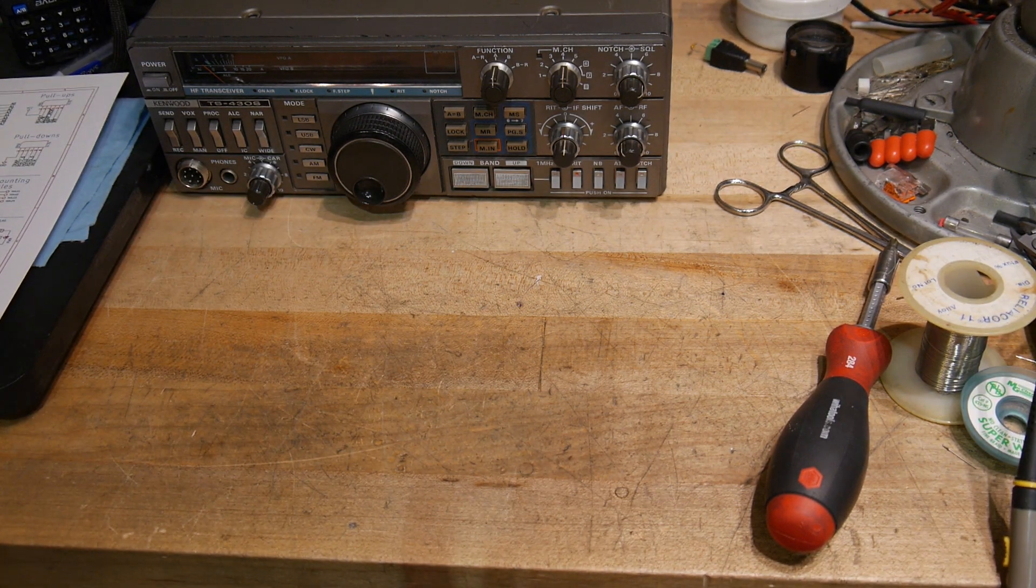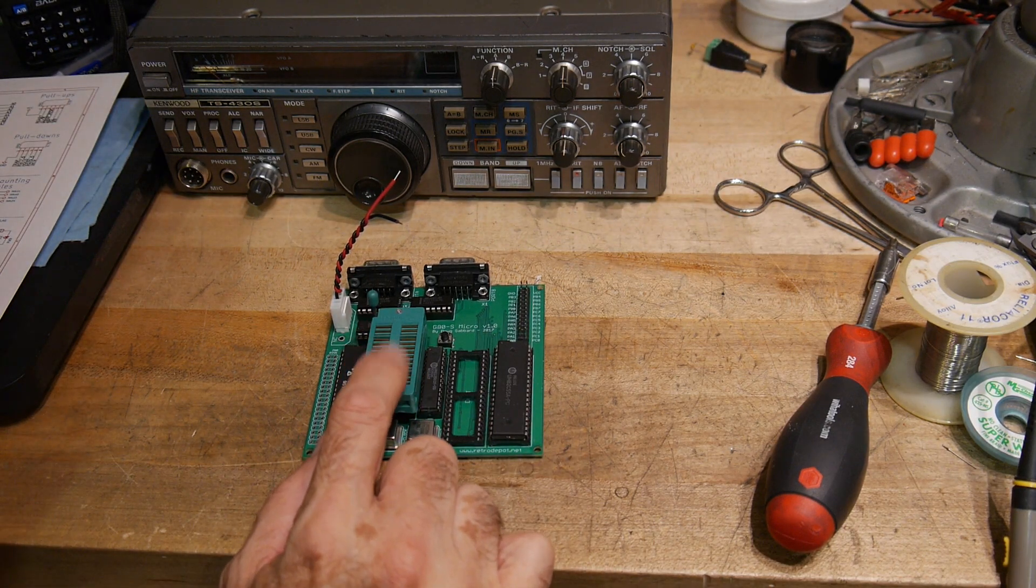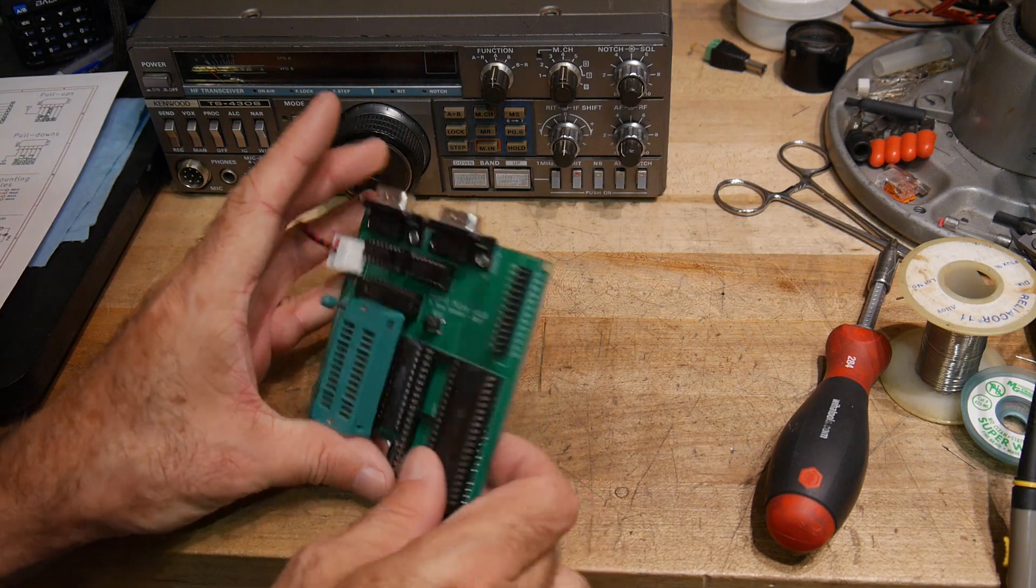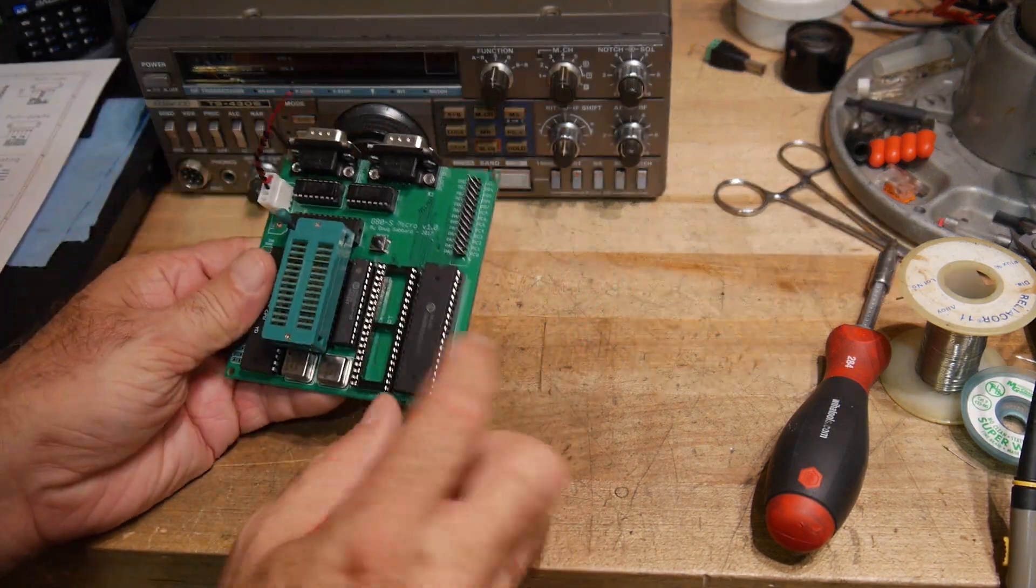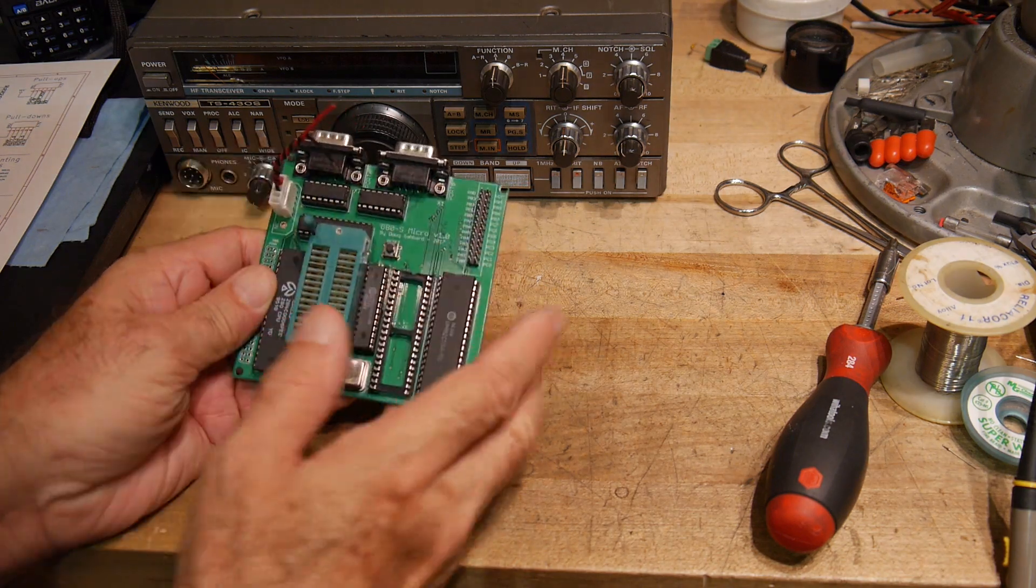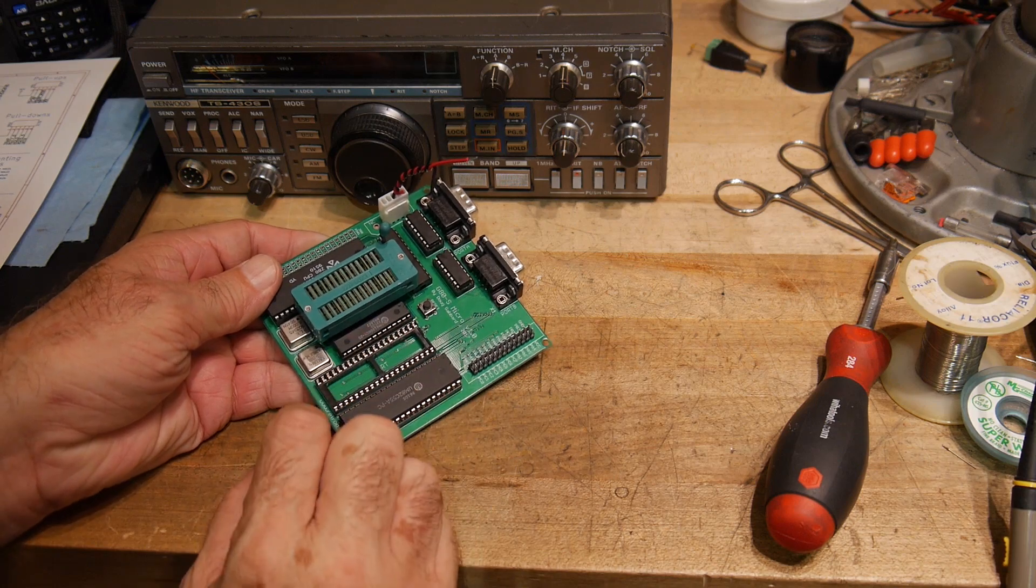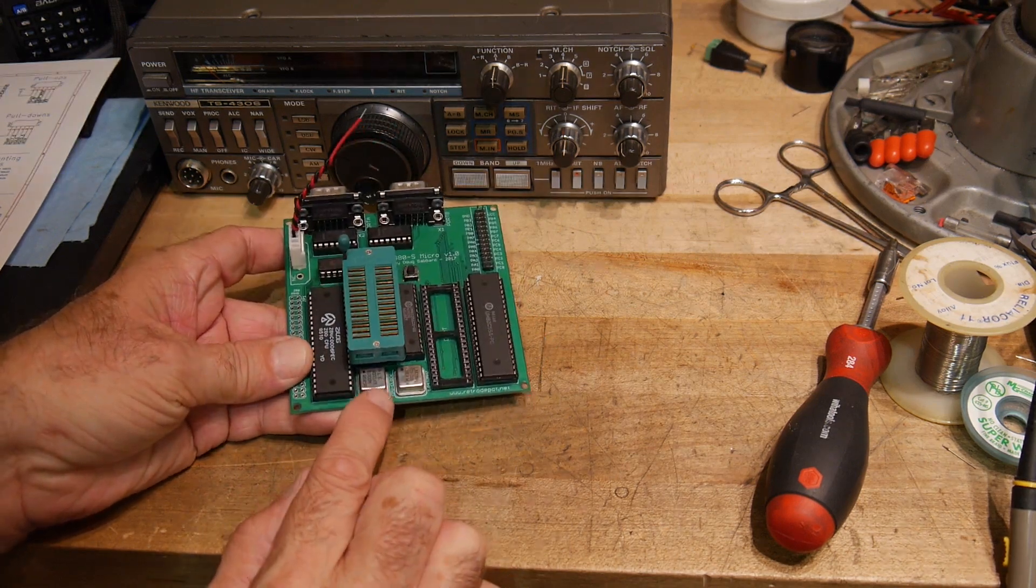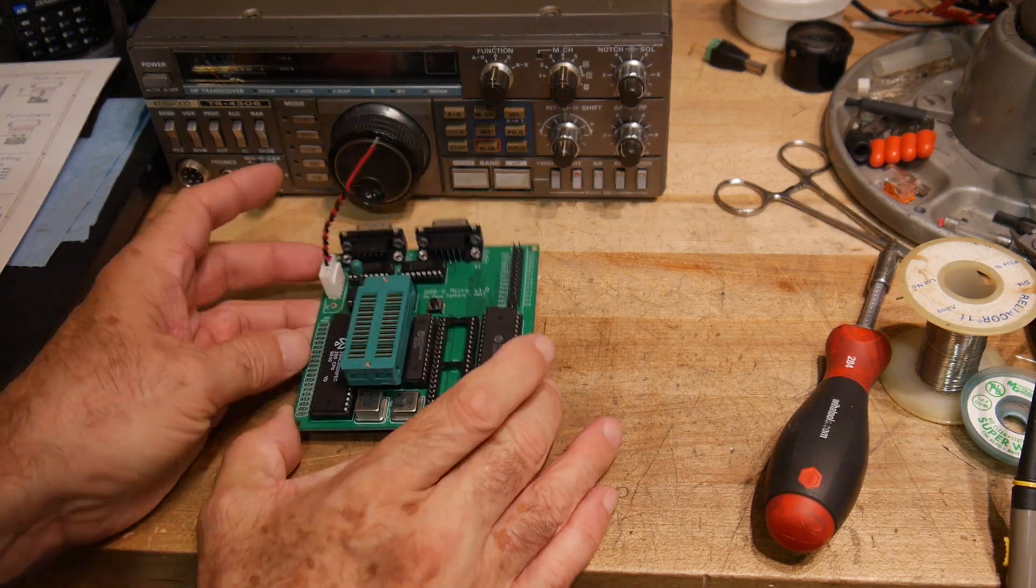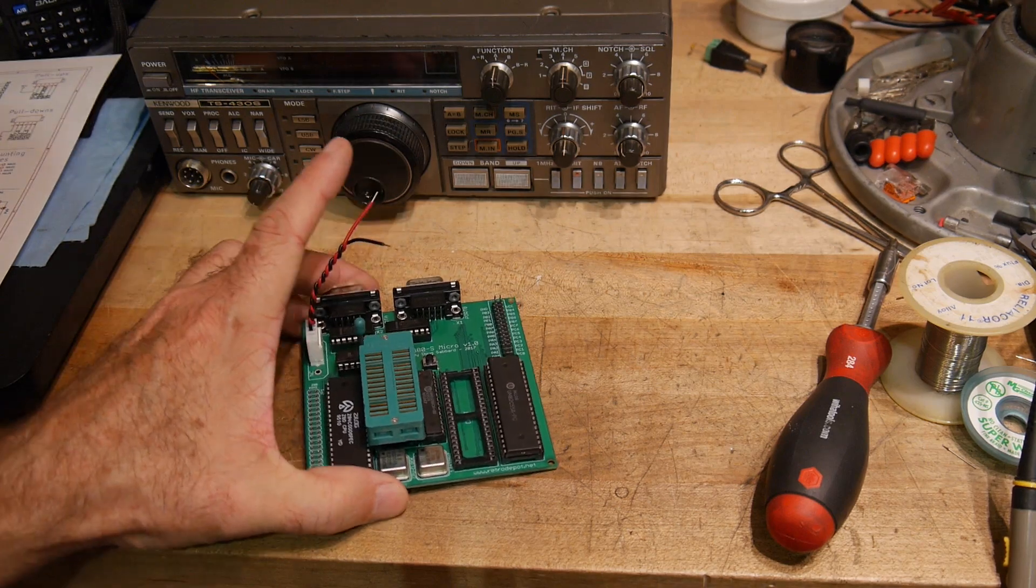I still am waiting for a couple parts for my Z80 board here. I need the UART and I need the ROM. Those are in the mail somewhere. I think both are coming from China. I did receive the RAM chip. I did get a six megahertz oscillator from the junk store. And so, we're looking good there. But that's not what this video is about.